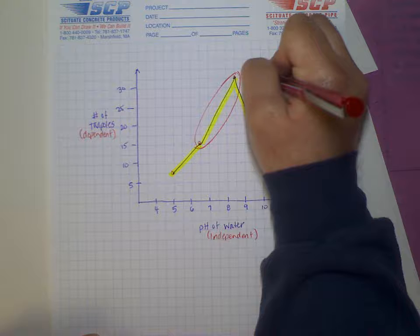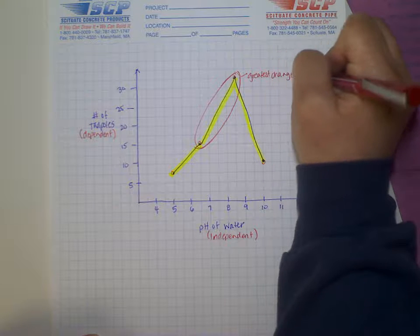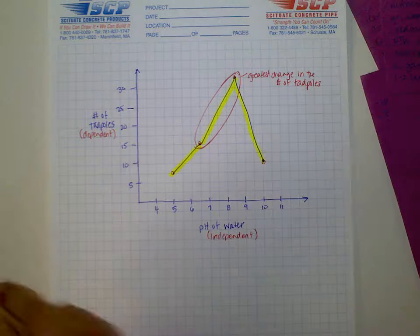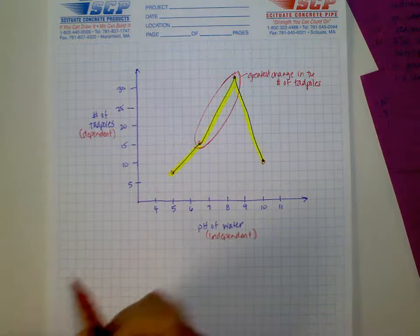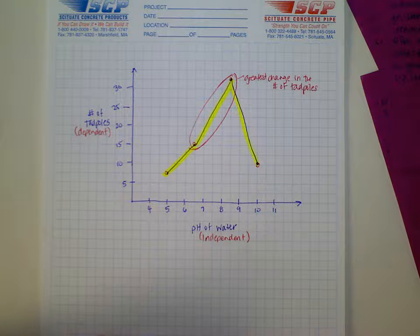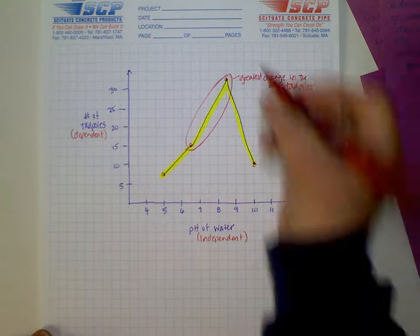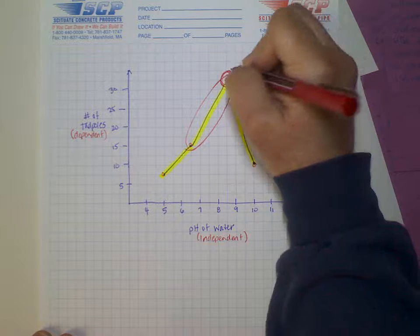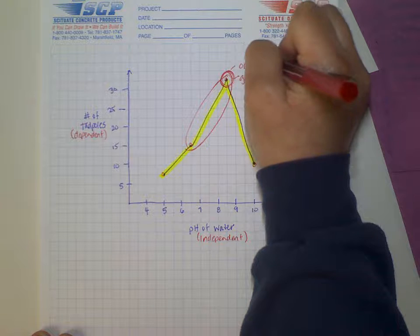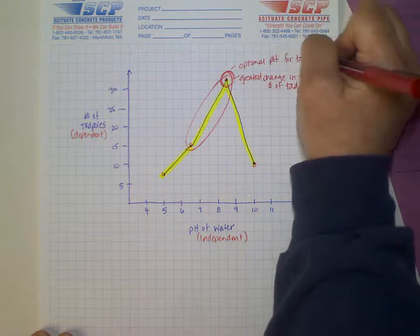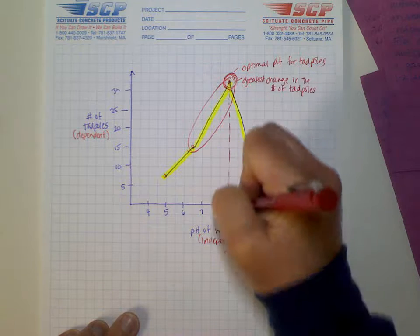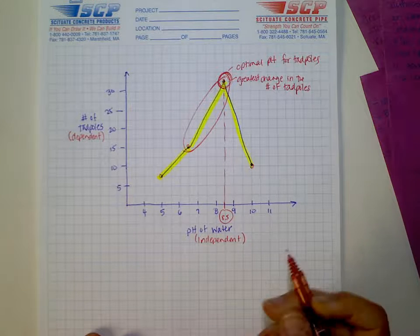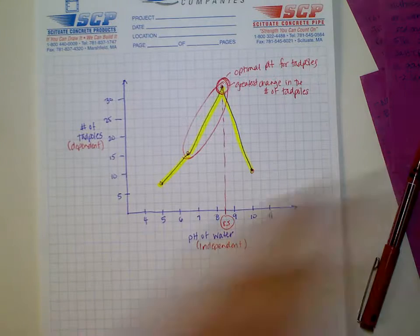There are a couple of different questions we can ask based on this graph. For example, where was the greatest change in tadpole population? We can see right off the bat that the steepest slope is the area of greatest change. We can determine that because we have an even distribution on our x-axis. We could also ask: what is the optimal pH for tadpoles to exist in? Optimal meaning best — it's the pH where we had the most tadpoles. In this case, it's right between 8 and 9, so our optimal pH is 8.5.